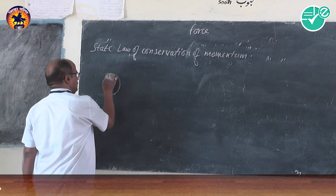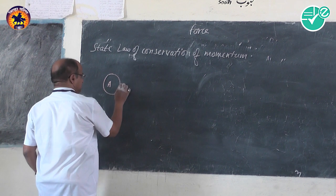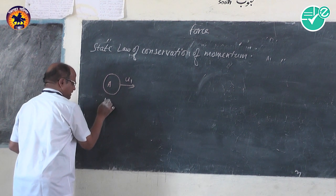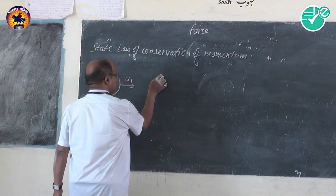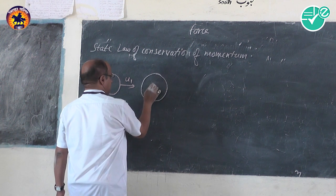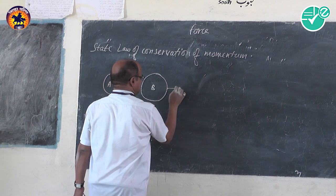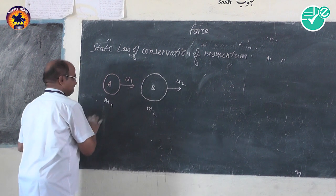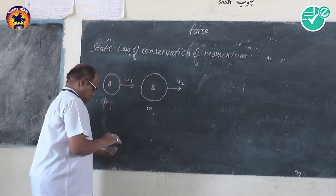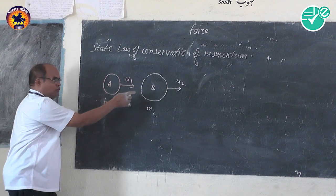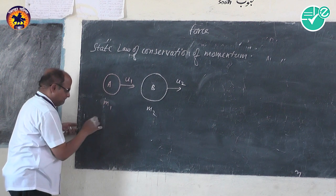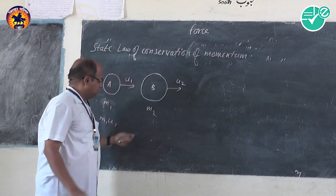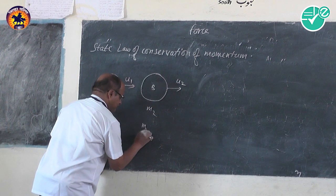Consider body A moving with initial velocity U1 having mass M1, and body B moving with velocity U2 having mass M2. So the momentum of the first body before collision is M1 U1, and the momentum of body B before collision is M2 U2.